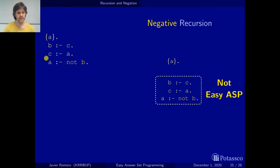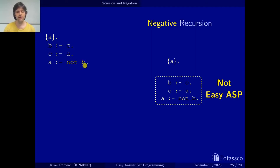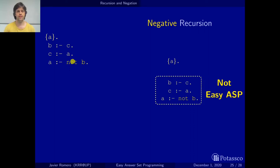And we have some predicate — in this case the predicate B with arity zero — that occurs in the head and also occurs in the body in an atom that is negated, in a negated literal. Then we are going to say that this is negative recursion because there is negation involved here.